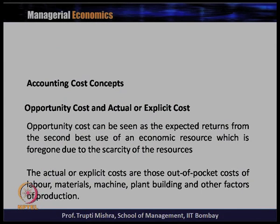The second type is actual or explicit cost. Actual or explicit costs are those out-of-pocket costs for labour, materials, machines, plant buildings, and other factors of production. Whatever the firms or producers spend on labour, materials, building, plant, and other factors of production — that is the actual or explicit cost. So the first category of cost under accounting purpose is opportunity cost and the actual or explicit cost.